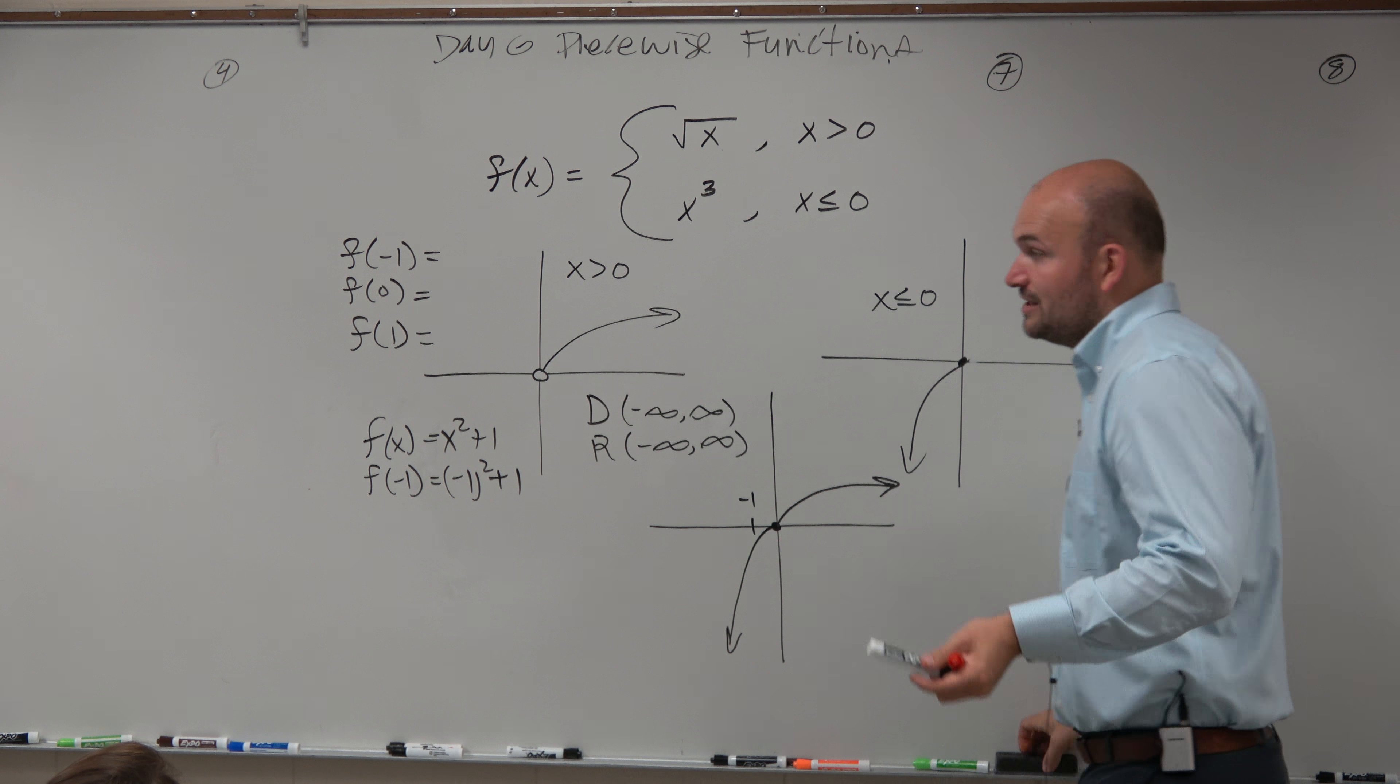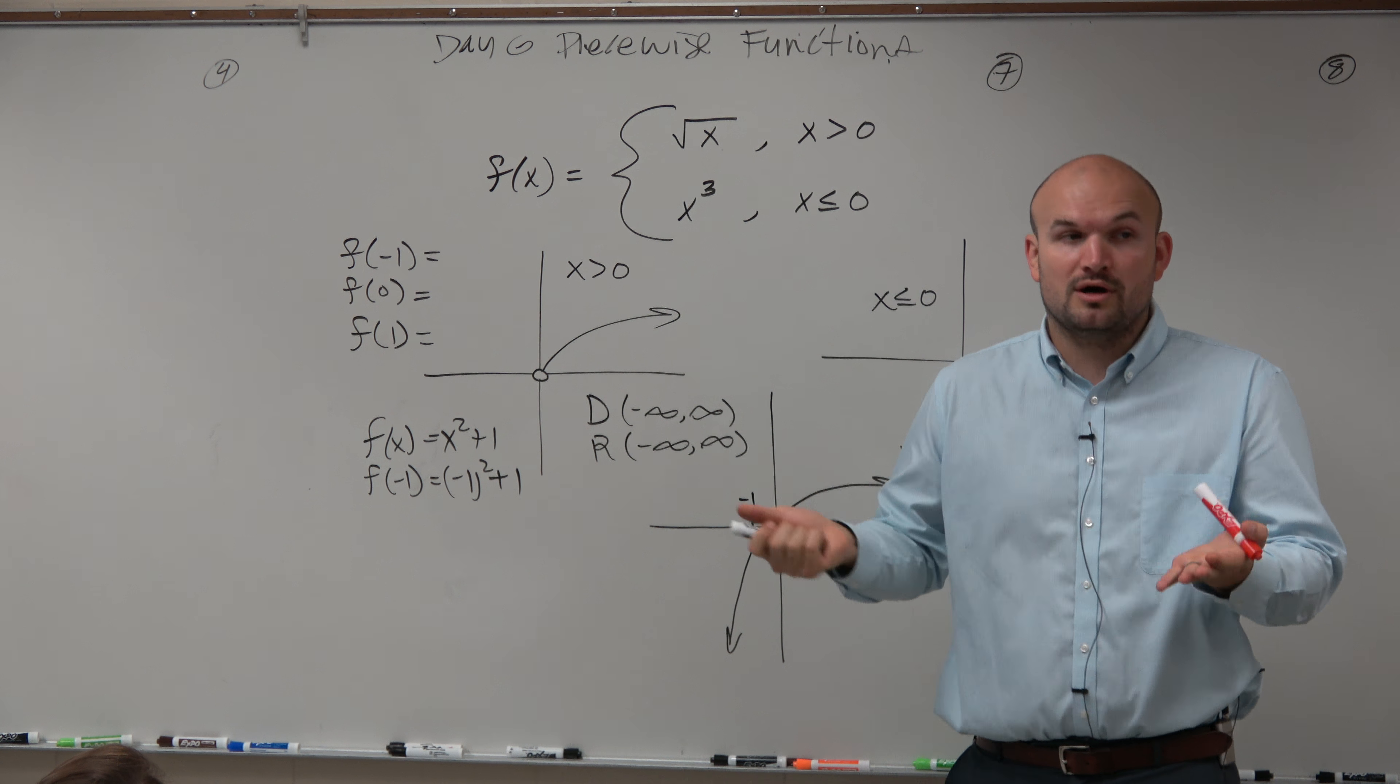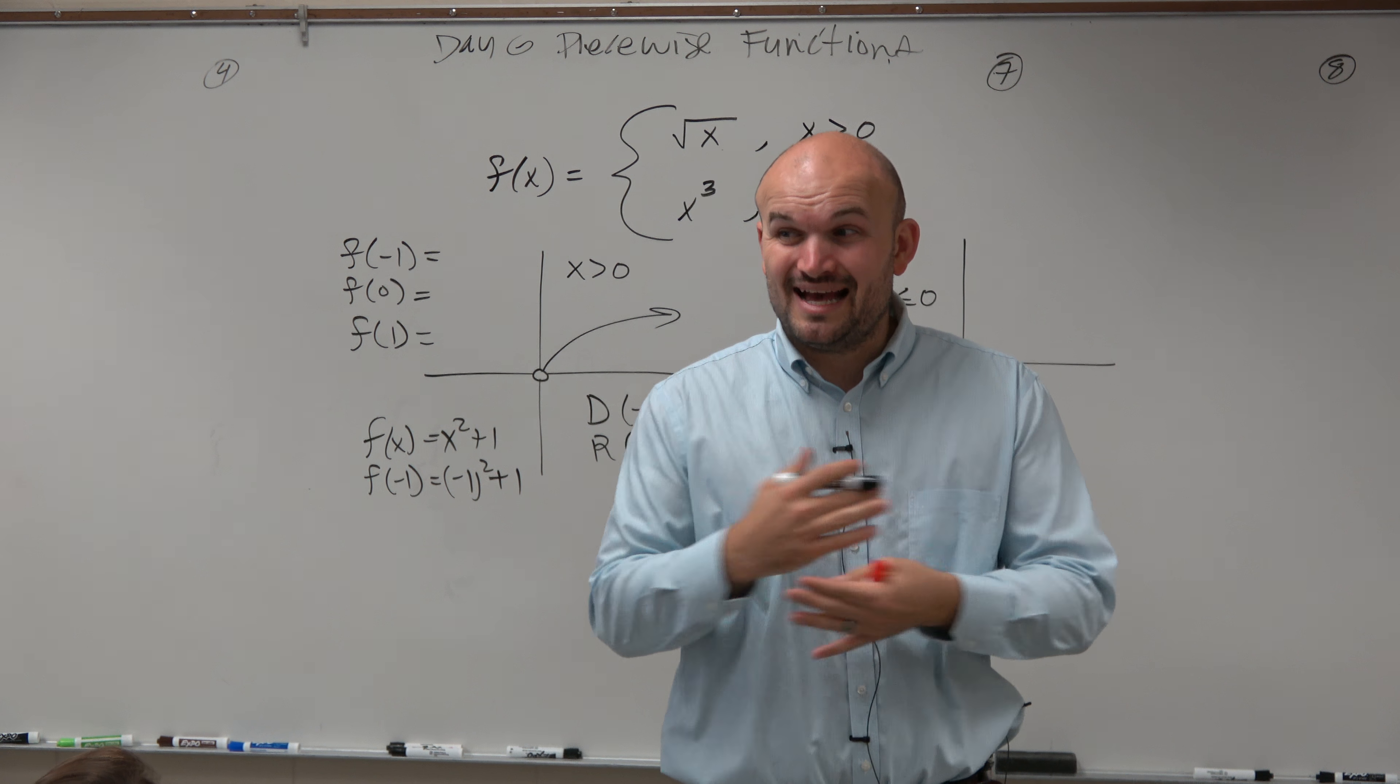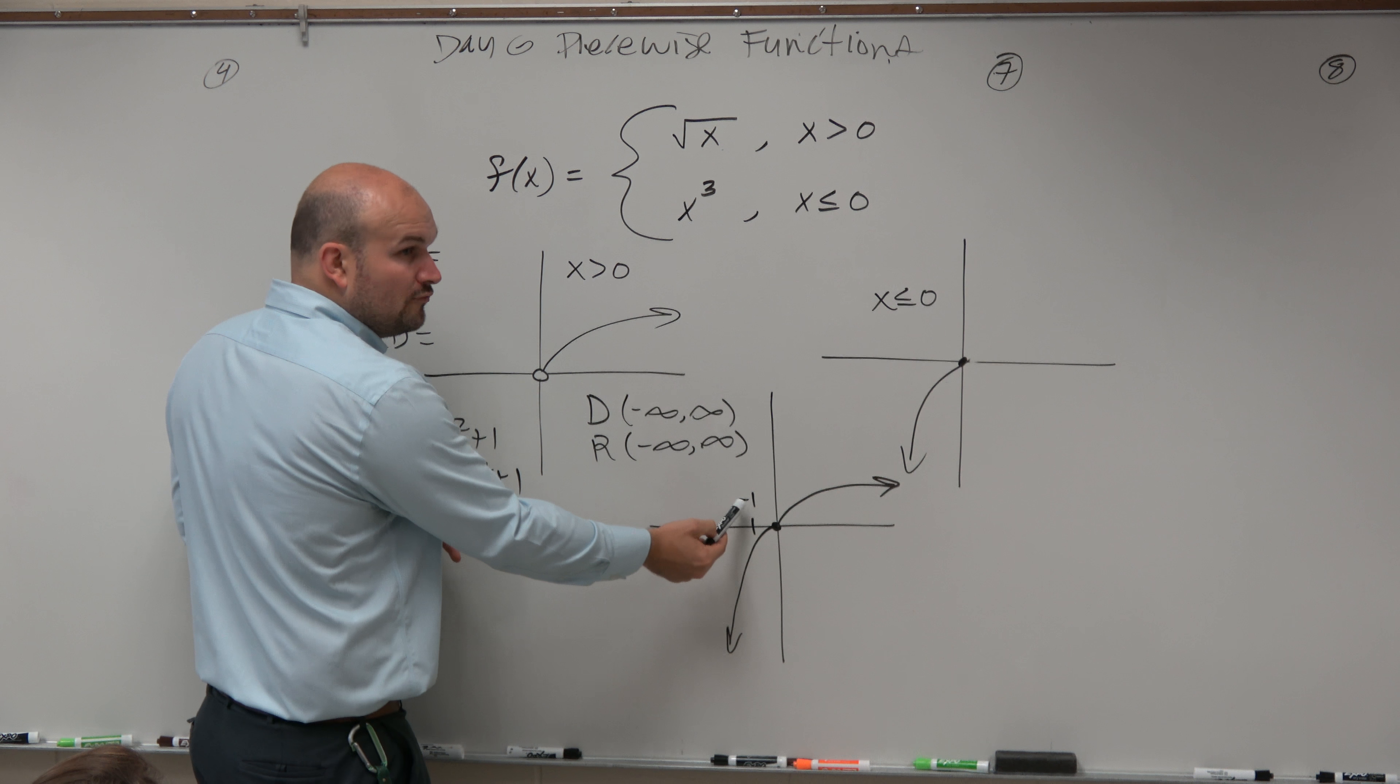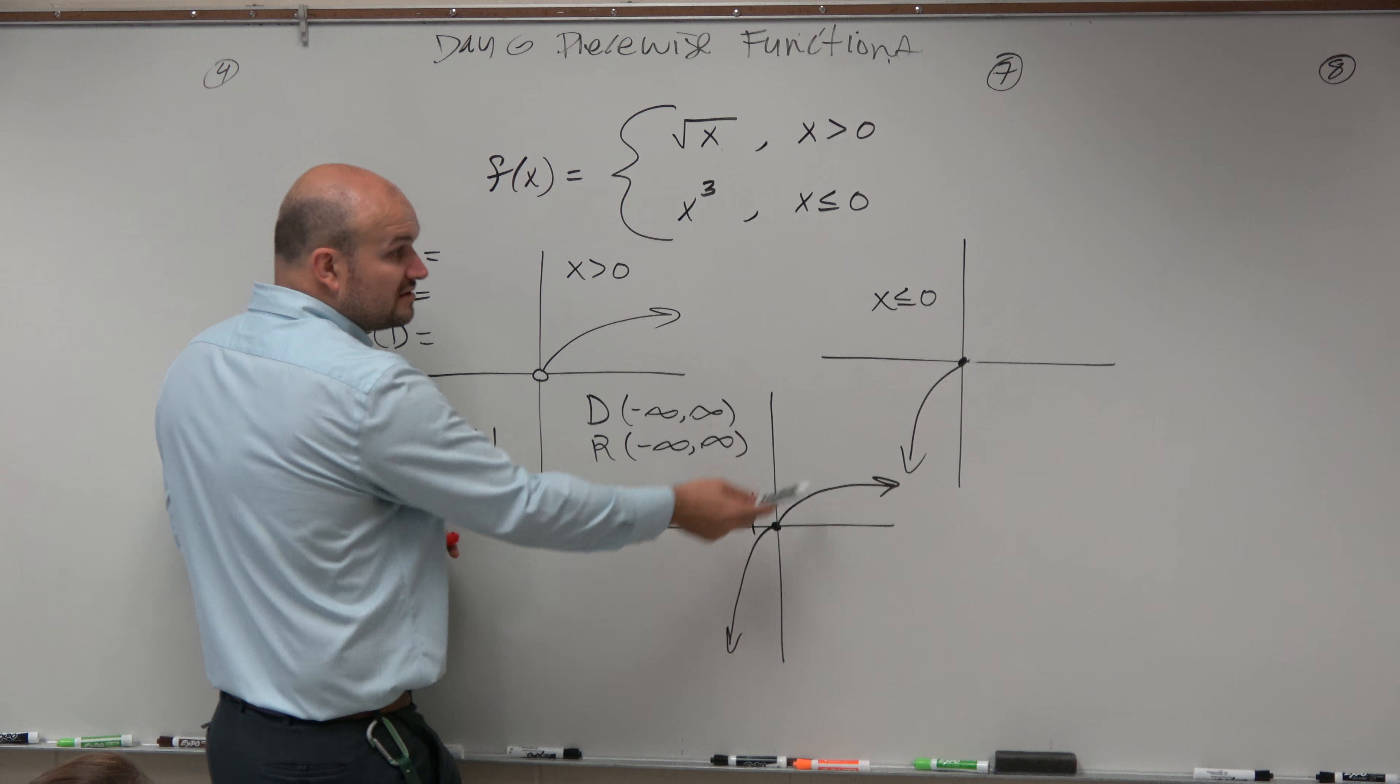So we do the same thing. The only issue is we have this piecewise function. So which one do you put the function into? Or doesn't it make sense to kind of put it into both? Well, in reality, it doesn't make any sense to put it into both because look at what the graph looks like. At negative 1, which function are we dealing with down here? The x cubed, right?